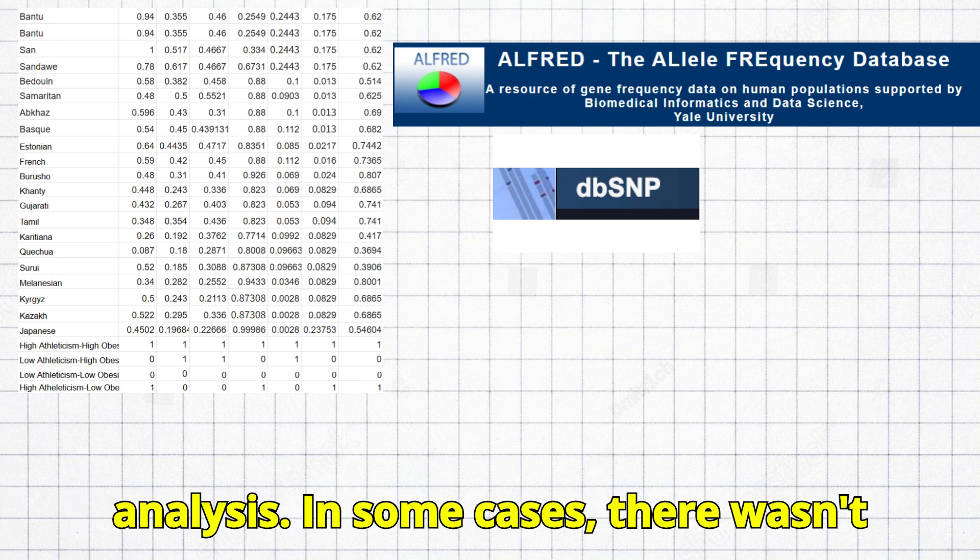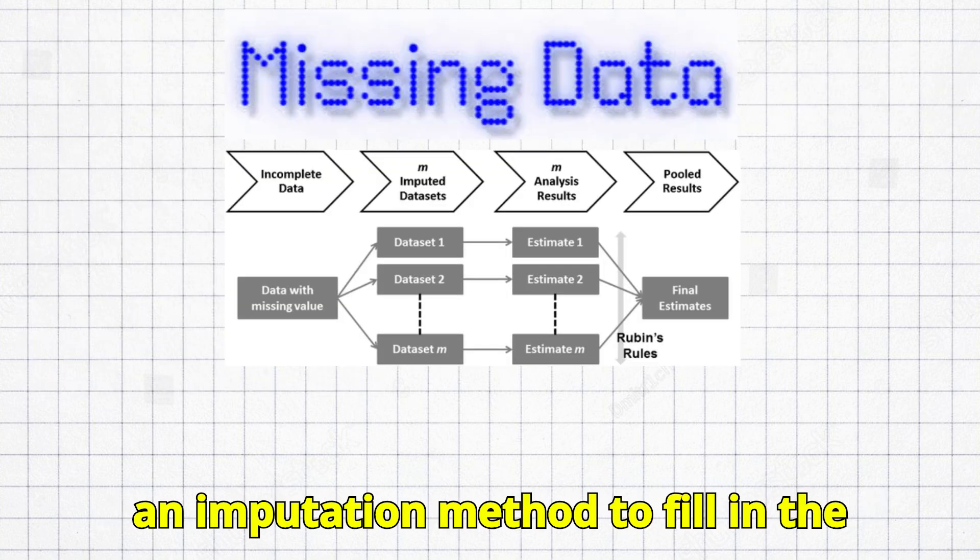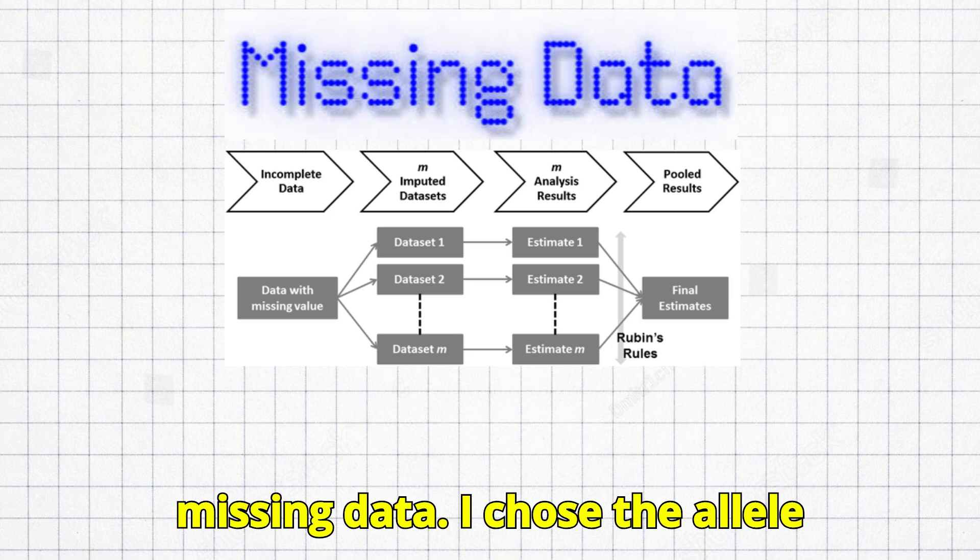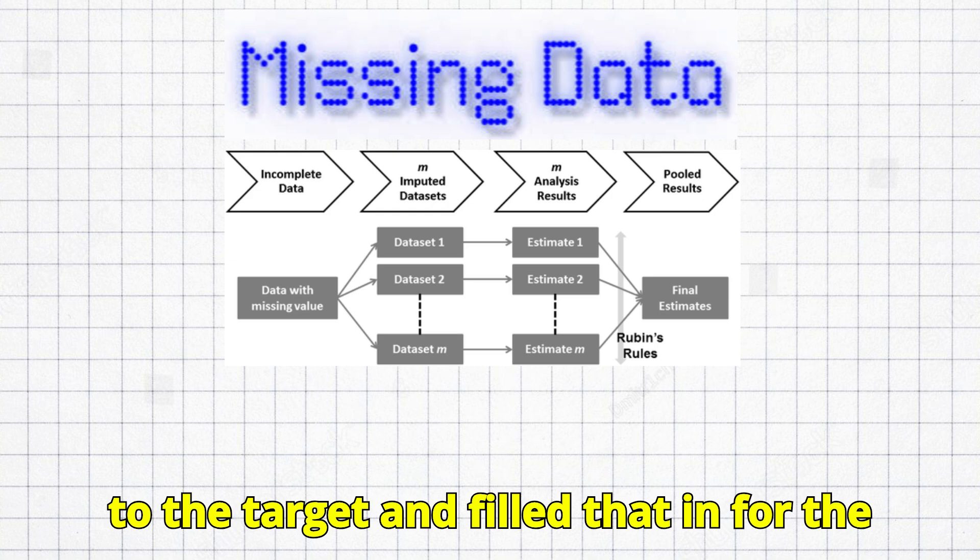In some cases, there wasn't data available on certain populations I chose for the analysis, and then I used an imputation method to fill in the missing data. I chose the allele frequency in the population most similar to the target and filled that in for the target.